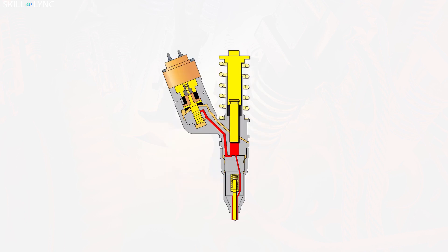When the solenoid valve gets de-energized, the spill valve will open again and the fuel gets returned to the tank through the return passage. The energization of the solenoid valve determines the amount of fuel and timing of fuel injection.